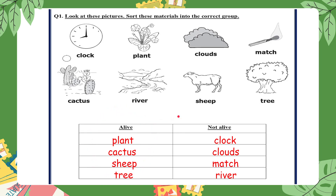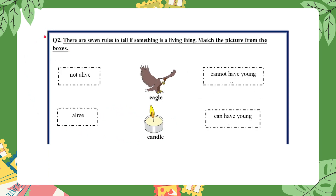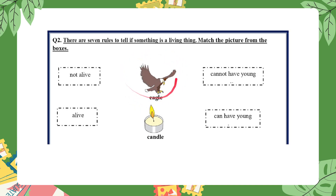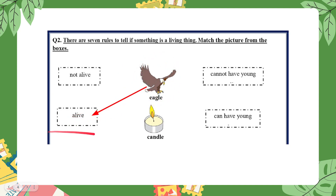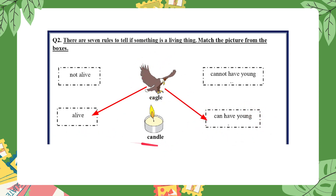The same applies in question two — there are seven rules to tell if something is a living thing. We are going to match the picture from the boxes. This is an eagle and a candle. An eagle is an animal and all animals are living things, so we draw a line — an eagle is alive. How do you know it is alive? Because it can have young. A candle is not alive because it cannot have young.